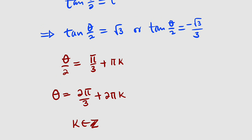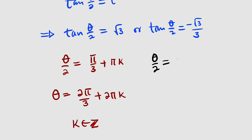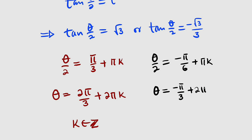For the second case, tangent of theta divided by 2 equals negative root 3 divided by 3. Taking tan inverse of negative root 3 over 3 on a calculator gives negative pi over 6. So theta divided by 2 equals negative pi over 6. Since tangent is periodic every pi, multiplying both sides by 2 gives theta equal to negative pi over 3 plus 2 pi k.